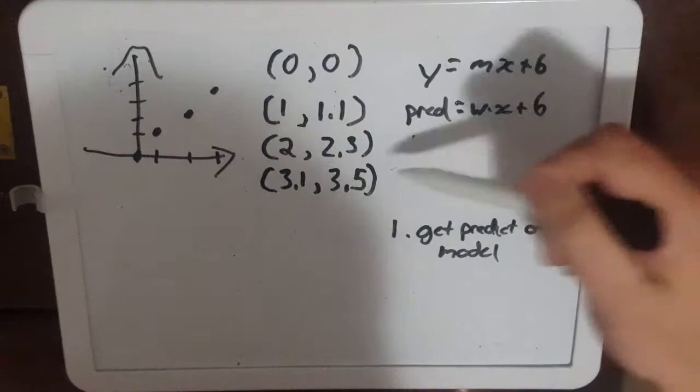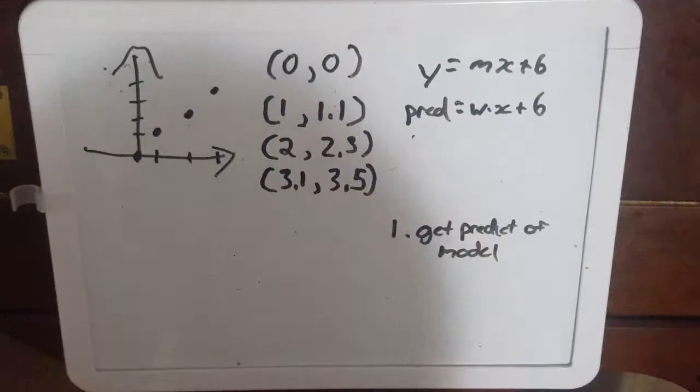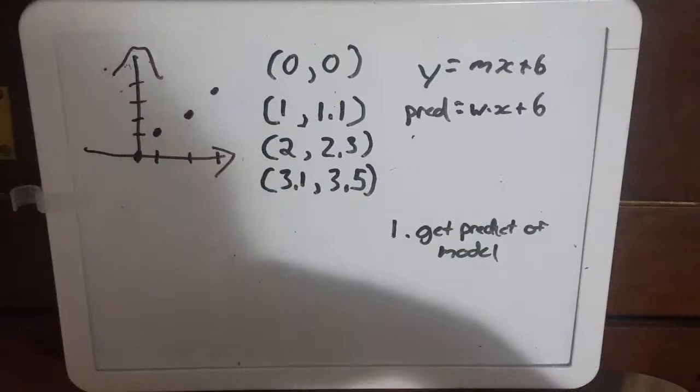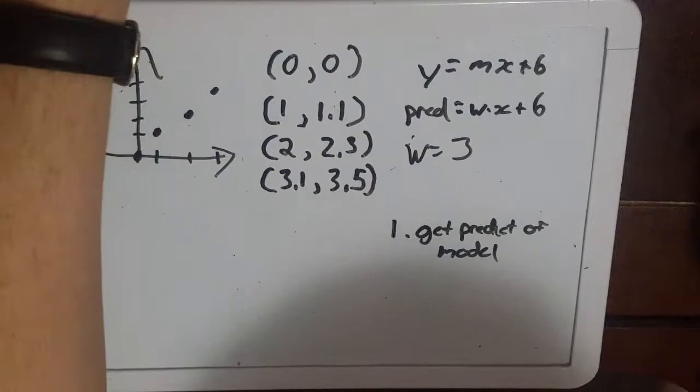Now we don't know the best value for our weight right now so we're going to stochastically initialize it. Stochastically is like a statistics term for random. So we're just going to get a random number roll the dice one to six and then initialize our prediction model's weight with that number. So let's pick three so our weight is going to equal three and for now I'm not going to worry about the bias right now because it's just a little easier.